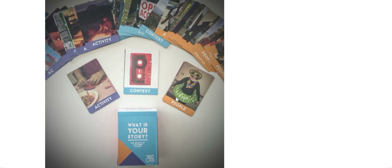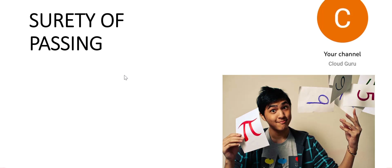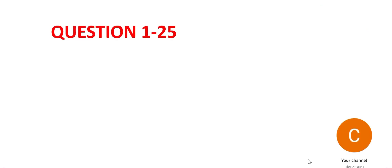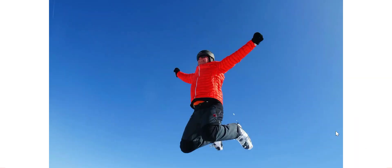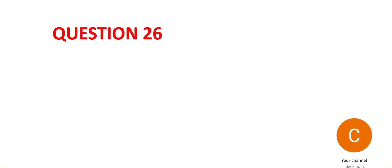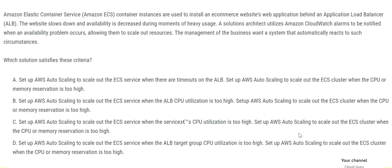The method we use is: we go through the questions, try to understand the story first, and then decode the options. If you understand the concepts, the certainty of passing is guaranteed. For questions 1 to 25, please refer to parts 1 to 6 of this video series. Let's jump into the questions — question number 26.